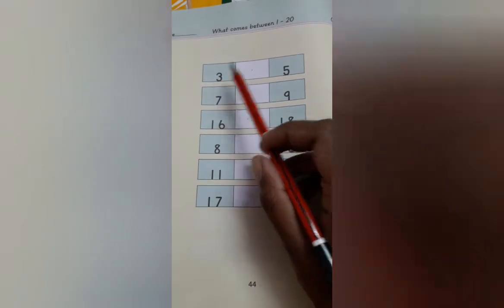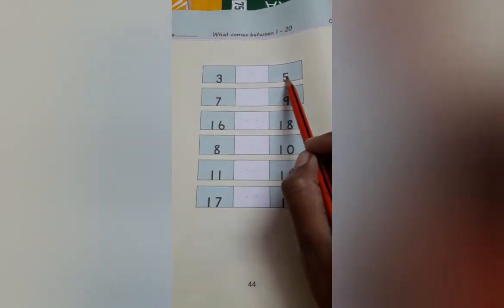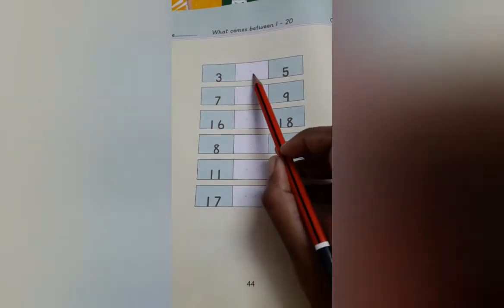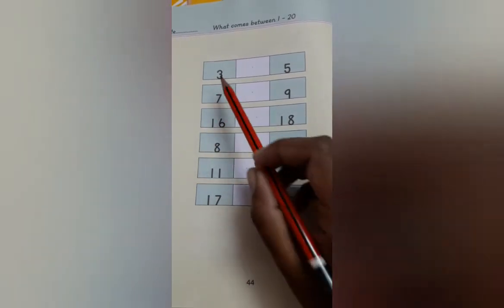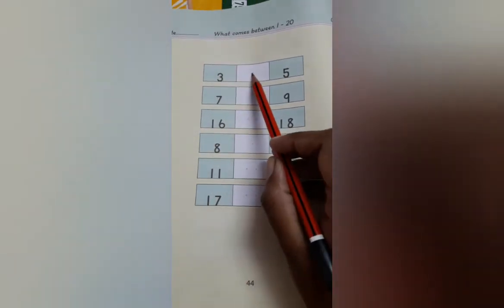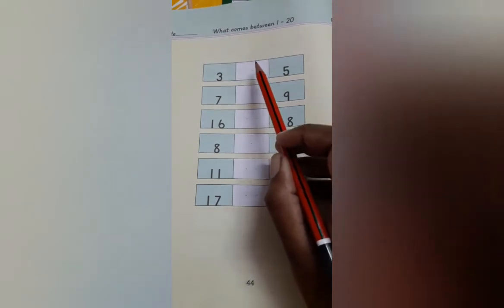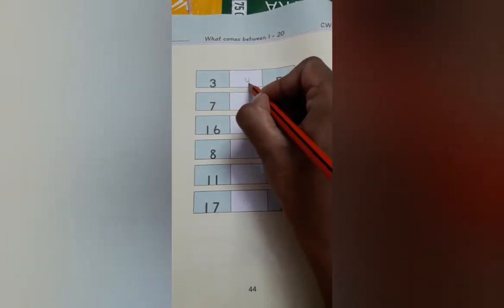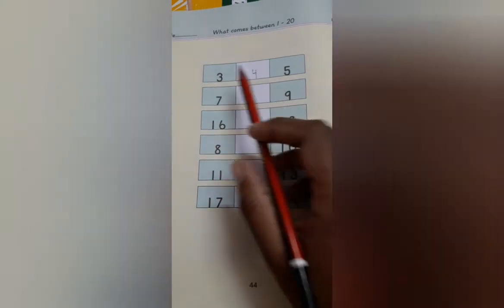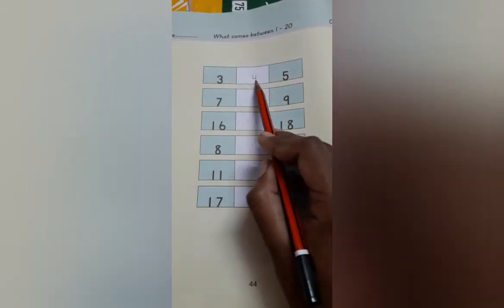Now read this number: 3. And this one is 5. One number is missing here, right? Yes, tell me which number is missing. 3, 4. Yes. What comes between? Yes, number 4. Right here, number 4. Now it's complete. 3, 4, 5.